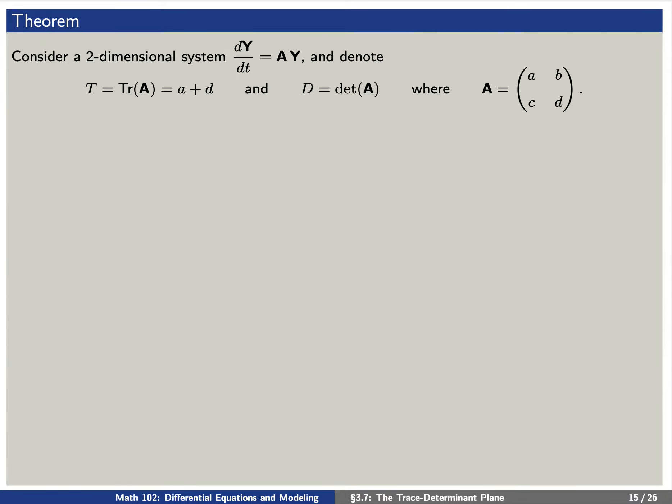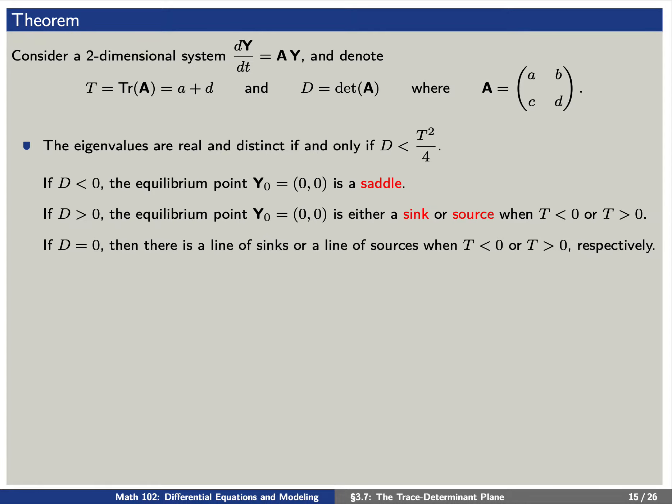Today we have one main theorem that answers this motivating question in the affirmative. Consider a two-dimensional system dY/dt = AY, with T as the trace and D as the determinant of A. First: the eigenvalues are real and distinct if and only if D < T²/4. If D is negative, there is a unique equilibrium point and it is a saddle. If D is positive, the unique equilibrium point is either a sink or source depending on whether T is negative or positive. If D equals zero, there is a line of sinks or sources when T is negative or positive, respectively.